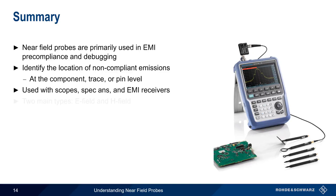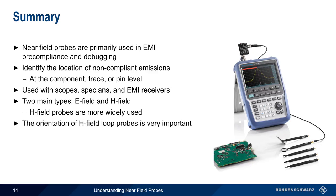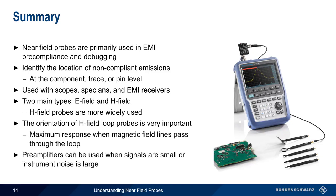There are two main types of near-field probes. E-field probes, which respond to the electric field, and H-field probes, which respond to the magnetic field. Of these two, H-field probes are more widely used. But most near-field probe kits come with both E and H probes. With regard to H-field loop probes, the orientation of the loop is very important. Maximum response occurs when the loop is positioned, such that the magnetic field lines pass through the loop. And finally, pre-amplifiers placed between the probe and the instrument can be helpful when the measured signals are small, or when the measuring instrument's internal noise is high.